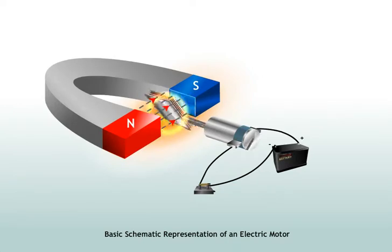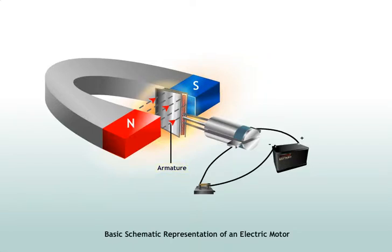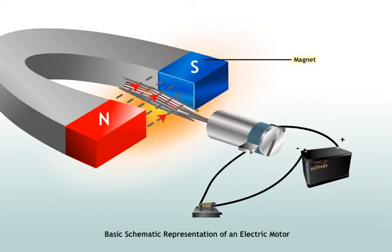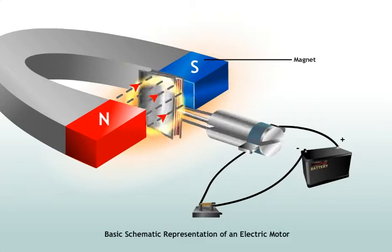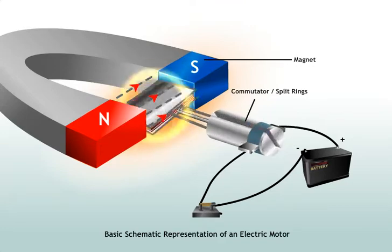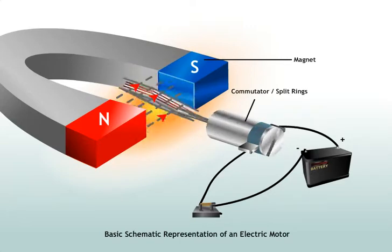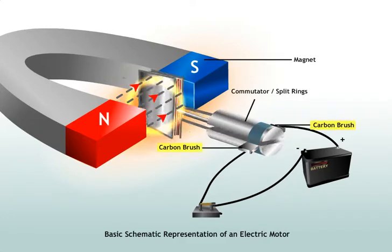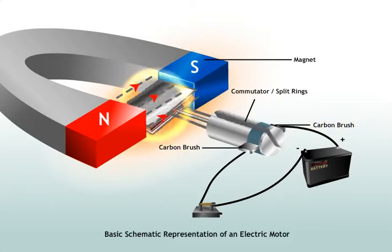An electric motor consists of six main parts: an armature that consists of laminated sheets of soft iron through which passes a shaft; a coil in the form of an insulated copper wire looped over the armature; a magnet that produces a strong and uniform magnetic field; a commutator, which is a metal ring split into two, also referred to as split rings, connected to the two ends of the coil, with the shaft passing through its center; two carbon brushes tightly fixed to the two split rings, connecting them electrically to the coil; and a battery that provides electrical energy to the motor.